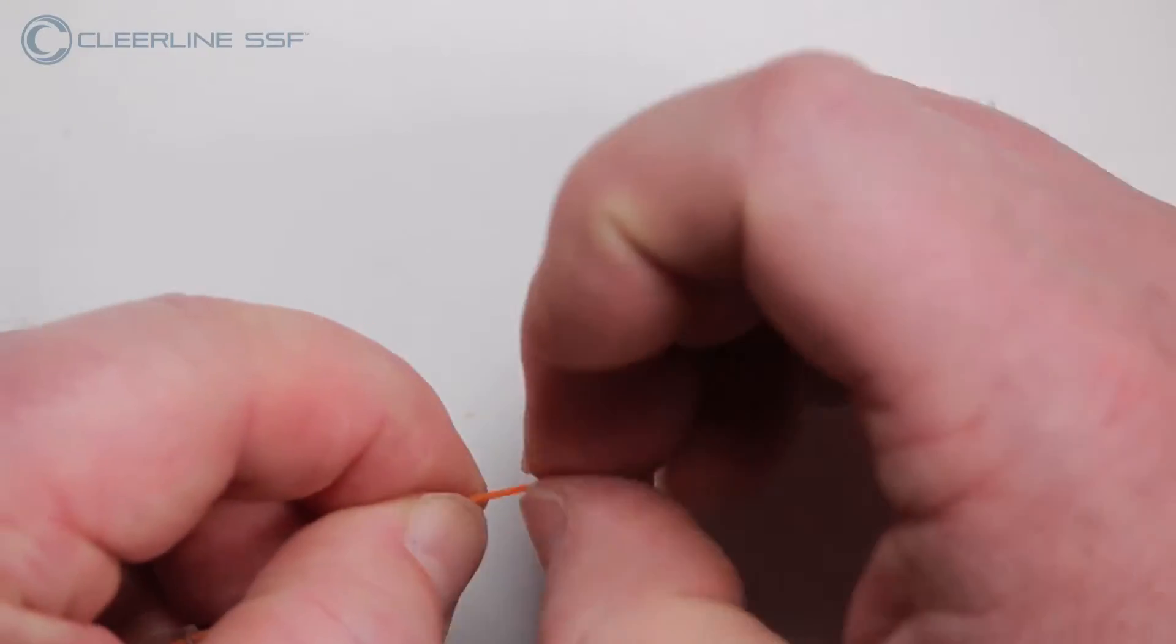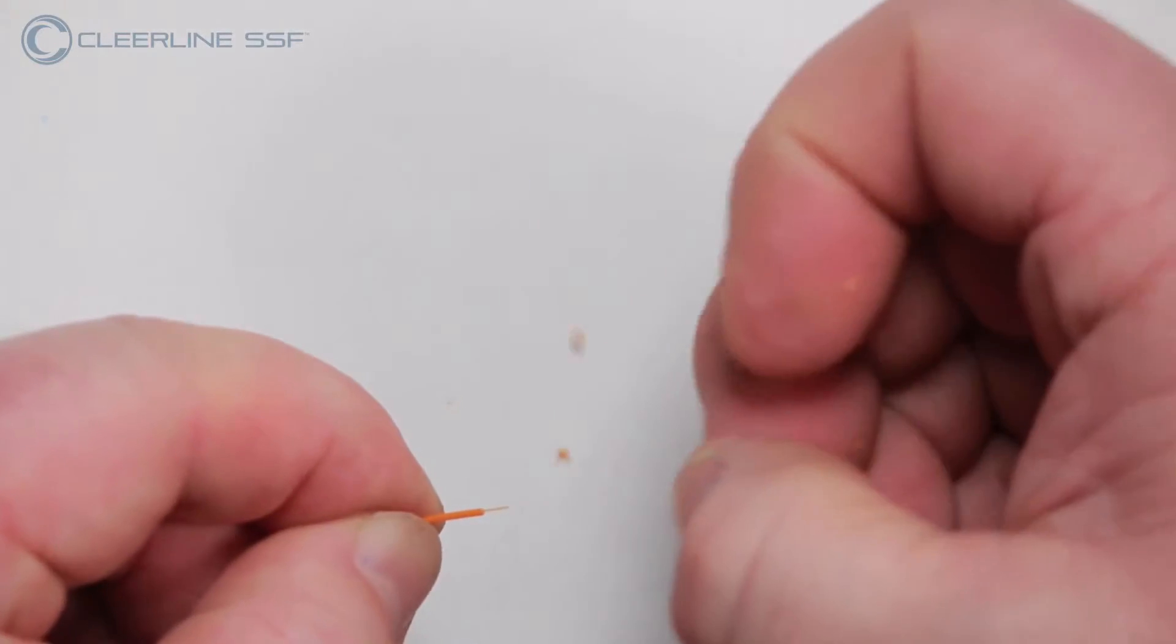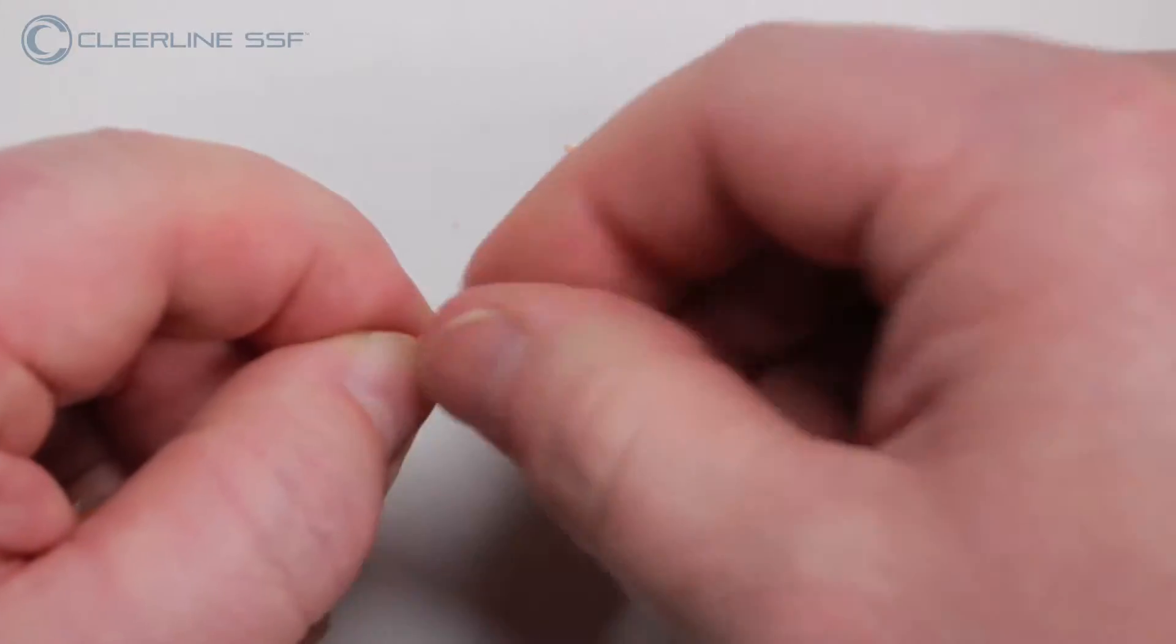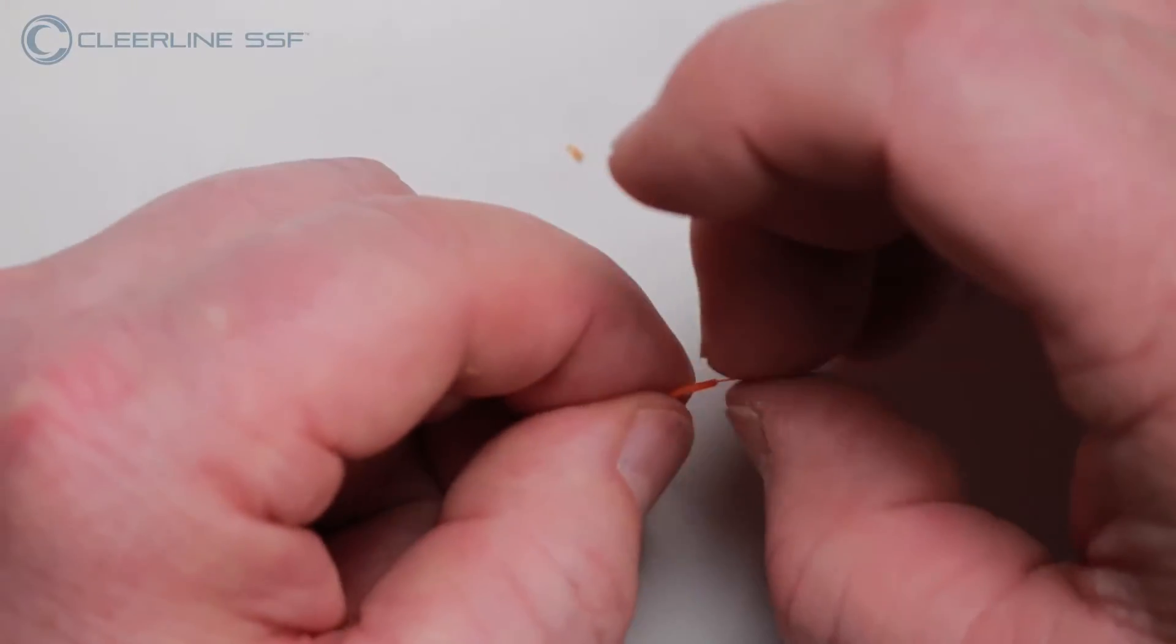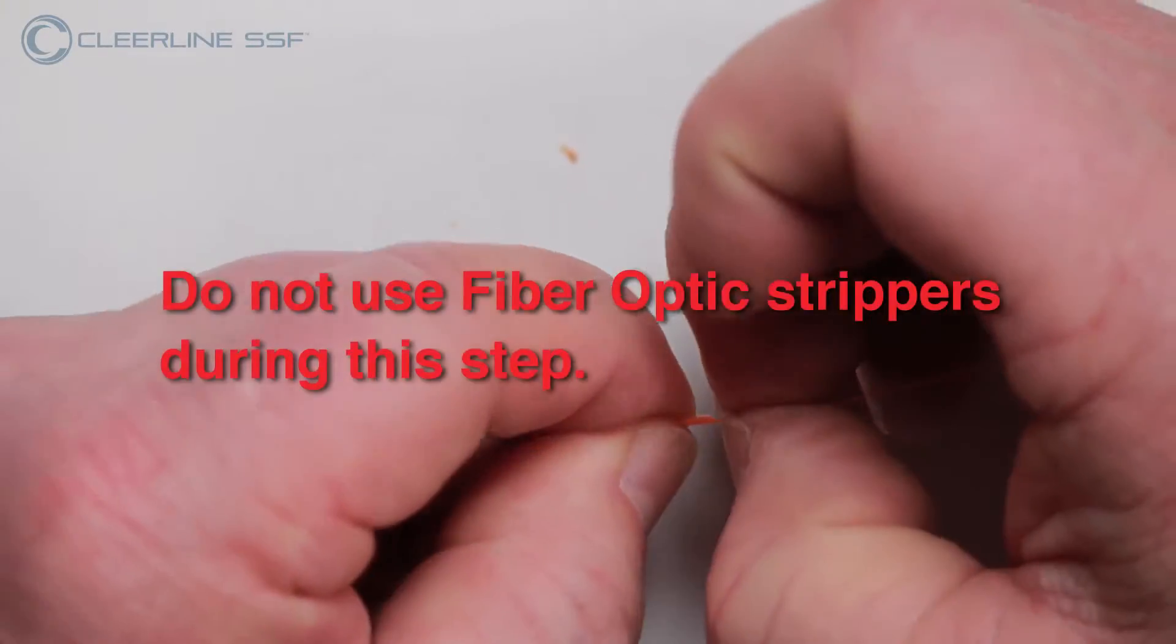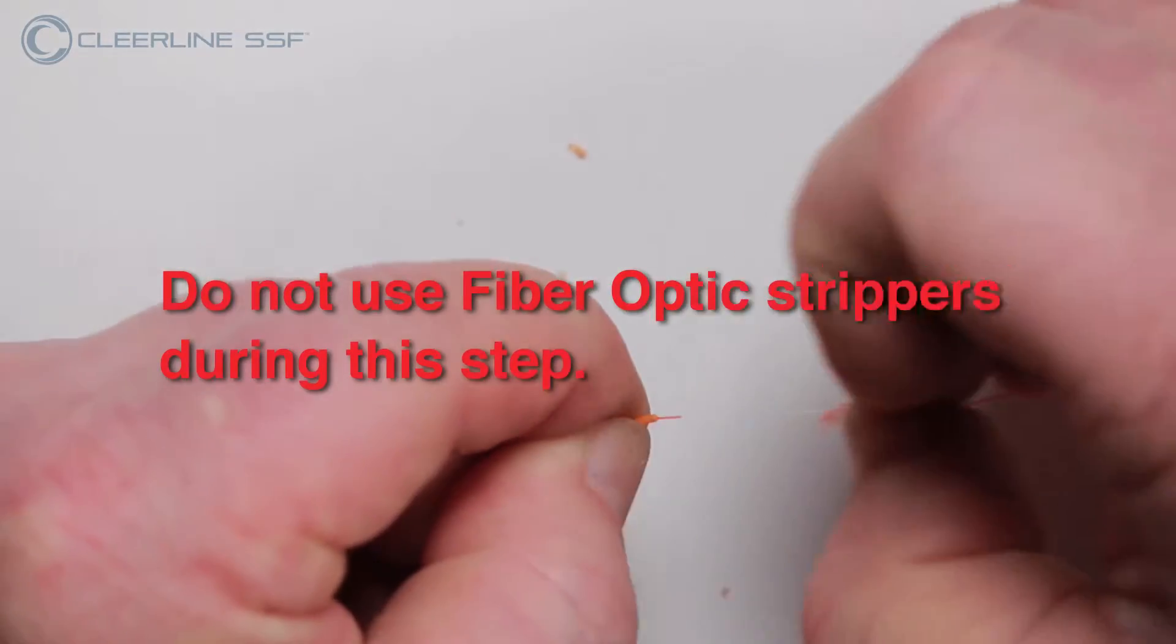Using only fingertips or nails, gently remove the soft peel colored 250 micron coating completely from the fiber. Do not use the fiber optic strippers during this step, as they can damage the SSF fiber's polymer coating.